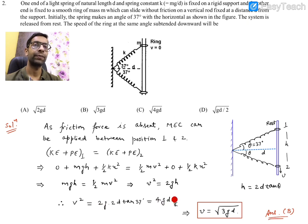So 4d into 3 by 4. Then you will find that 4 and 4 cancel out. So v-square value is 3gd. And v will come out to square root of 3gd. So option C will match perfectly. Then we will mark option C as correct response.